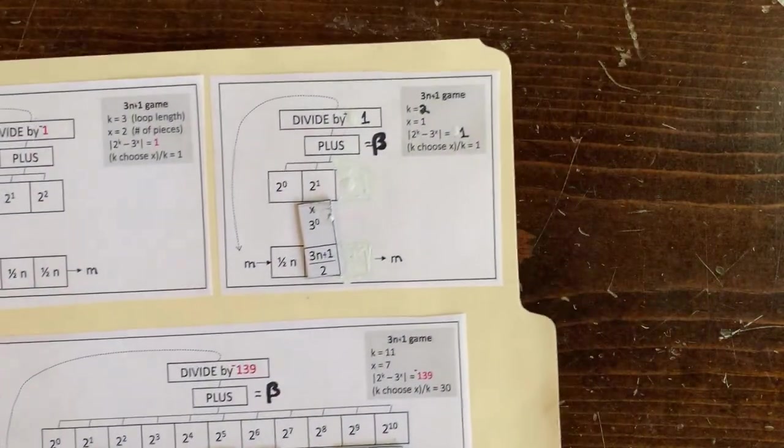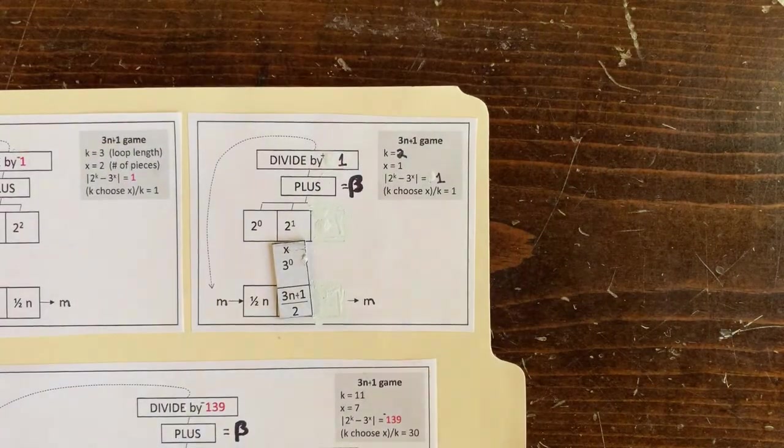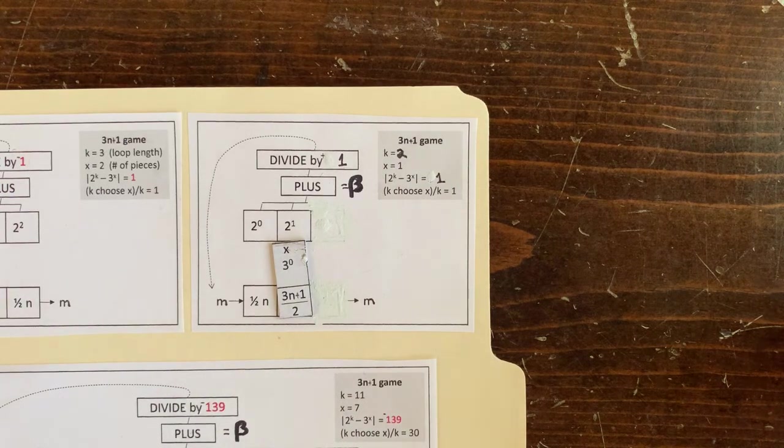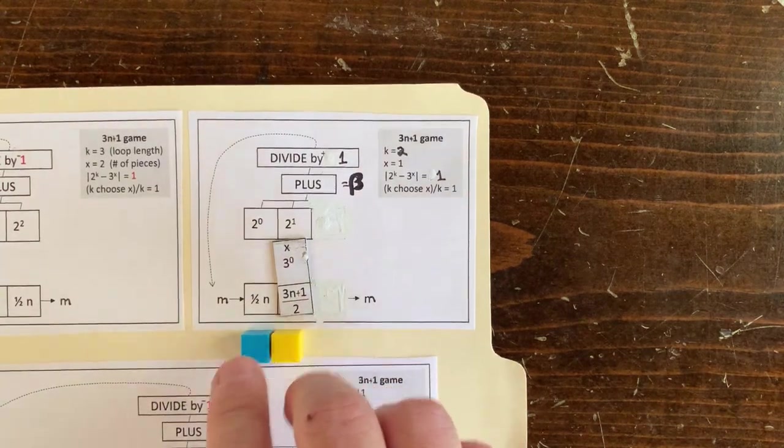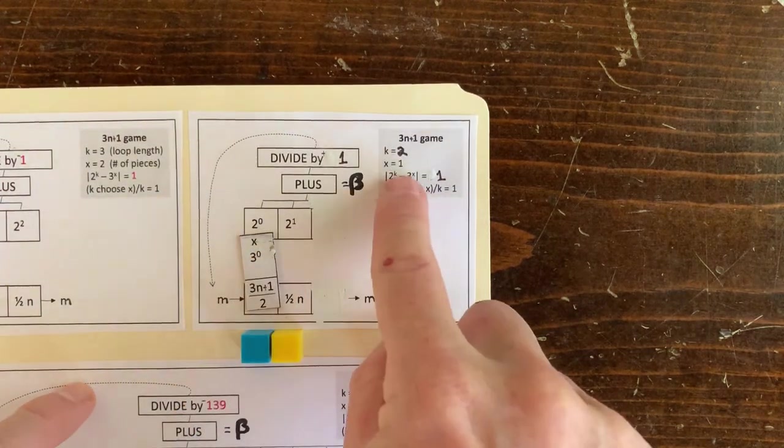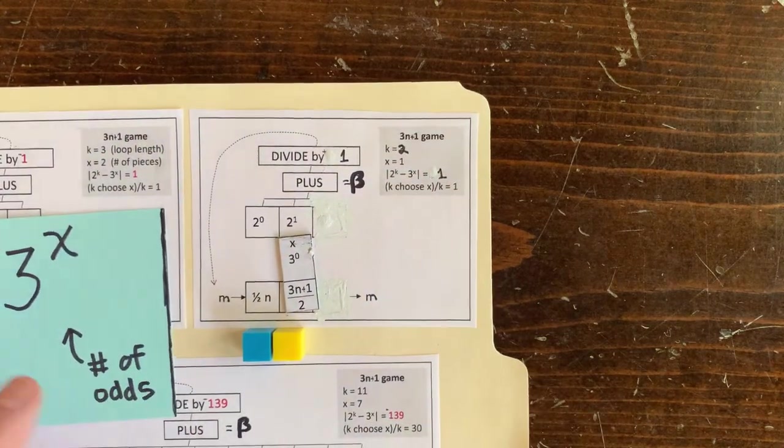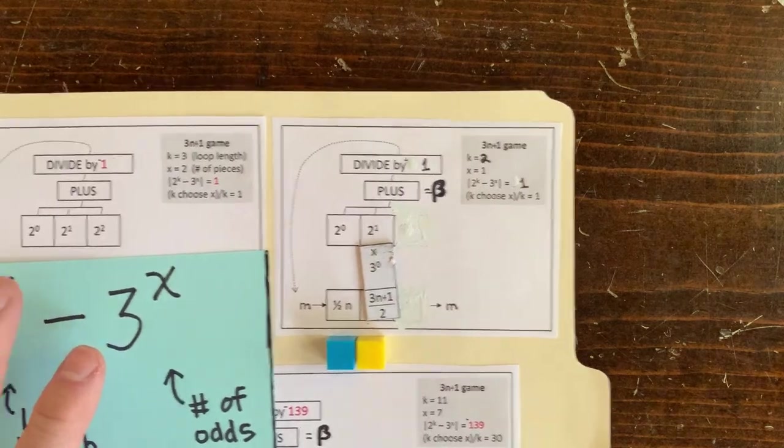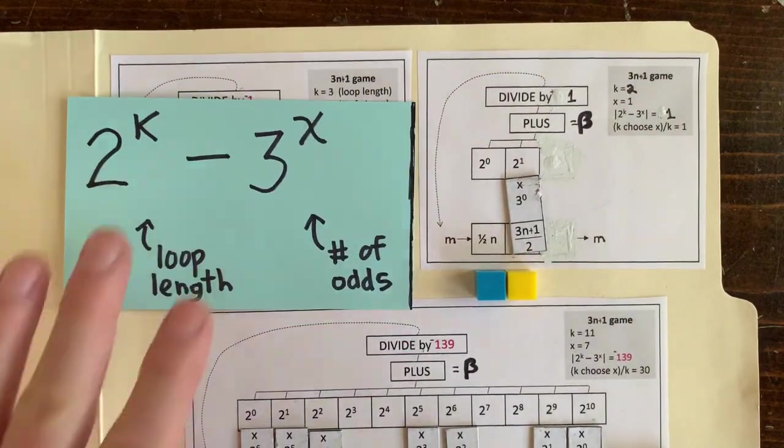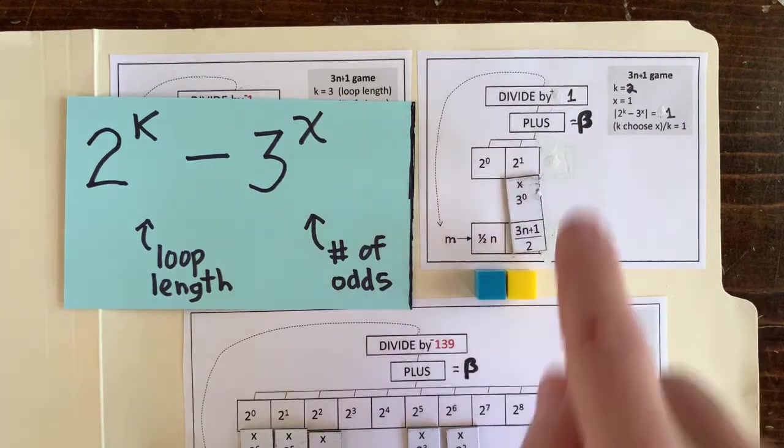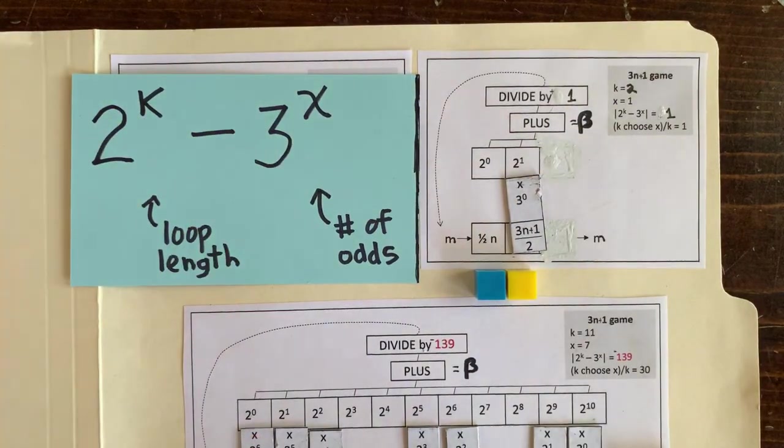That's a computer for loop length 11, k equals 11. Let's move to a smaller computer for loop length 2, k equals 2. If I put down one piece, then that's x equals 1, so k equals 2, x equals 1. Now 2 to the k minus 3 to the x is 4 minus 3 equals 1. Wow, no matter what integer beta comes out now, it'll still be an integer when we divide it by 1.